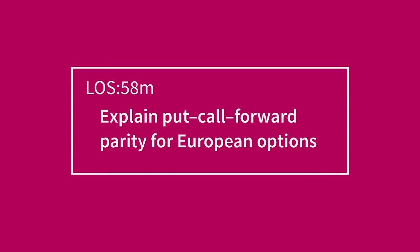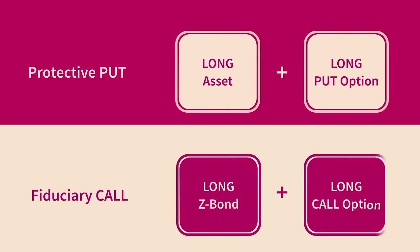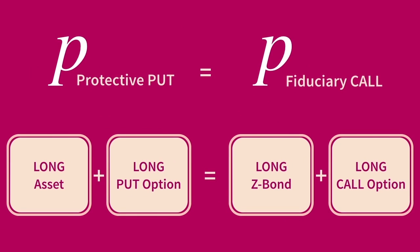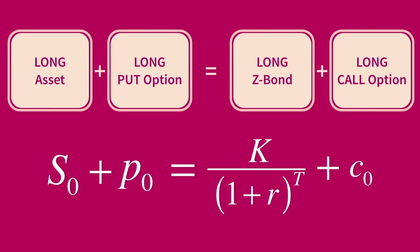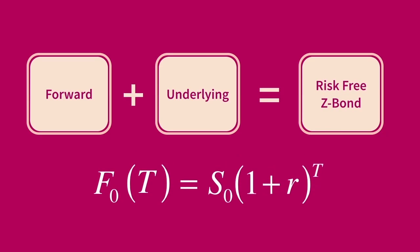We can develop a relationship between the price of a call option and the price of a put option using the price of an underlying asset and a risk-free zero coupon bond, giving us put-call parity. Also, if we combine an asset with a derivative, we can create a perfect hedge, the return of which should be no more or less than that of a risk-free zero coupon bond earning the risk-free rate.